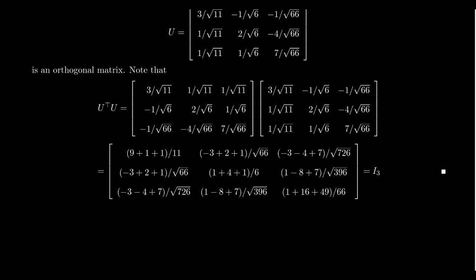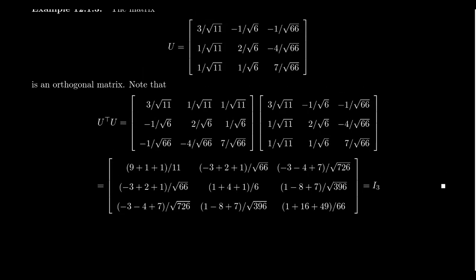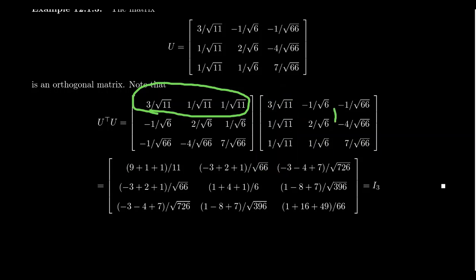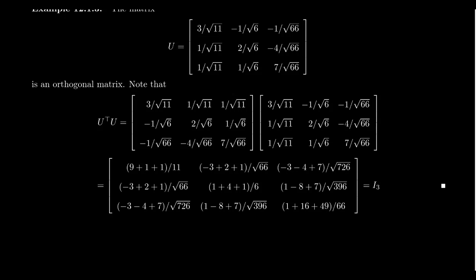You can check the columns are mutually orthogonal: ignoring the denominators, you get −3+2+1=0, and −3−4+7=0, and 1−8+7=0. When you compute U^T U, you get ones along the diagonal — for example, the first row times the first column gives 9/11 + 1/11 + 1/11 = 11/11 = 1 — and zeros everywhere off the diagonal. This confirms it is indeed an orthogonal matrix.